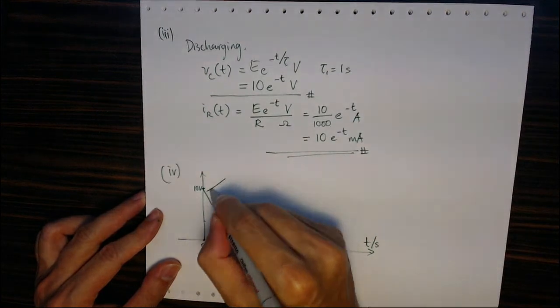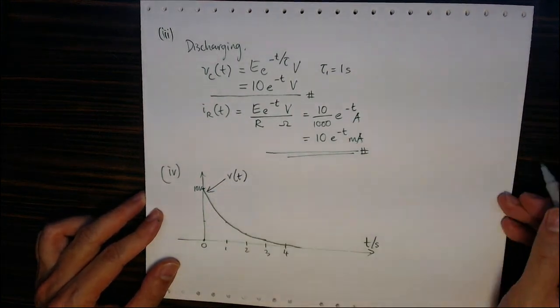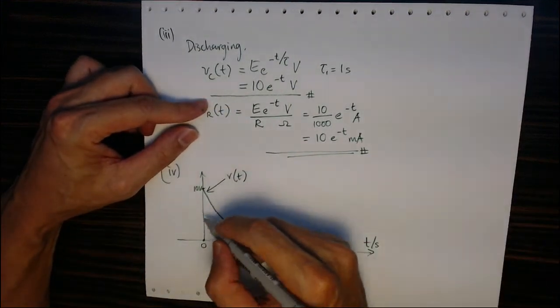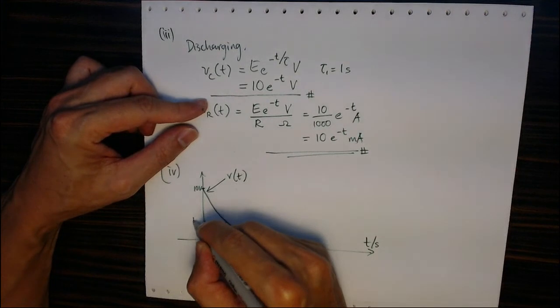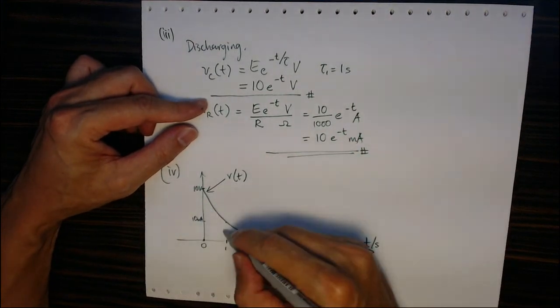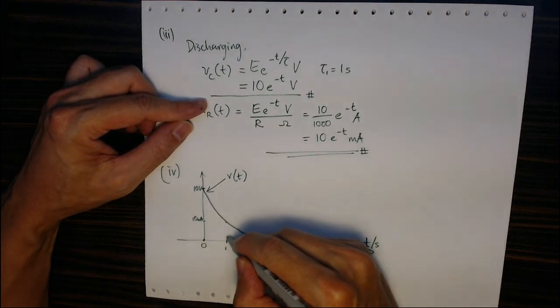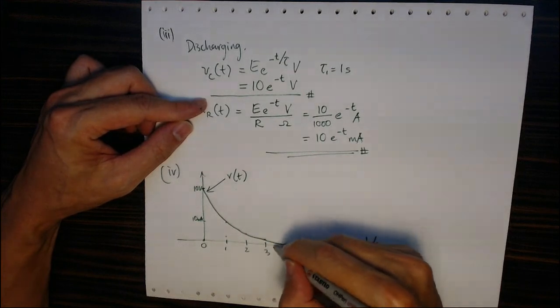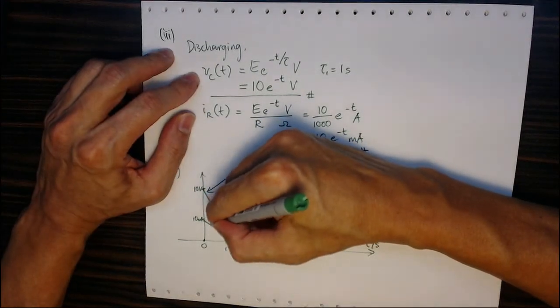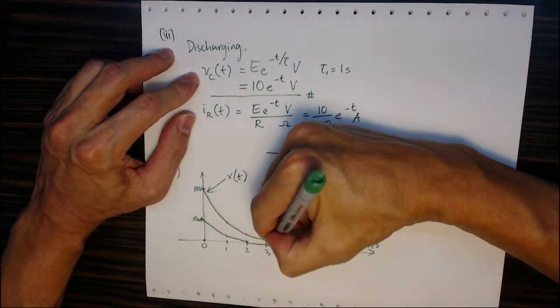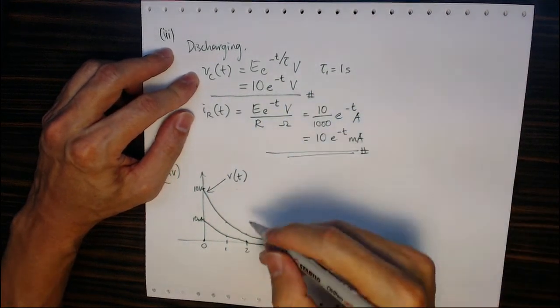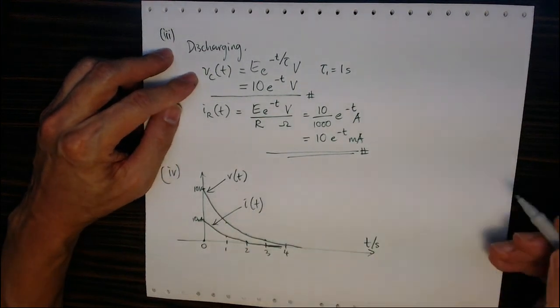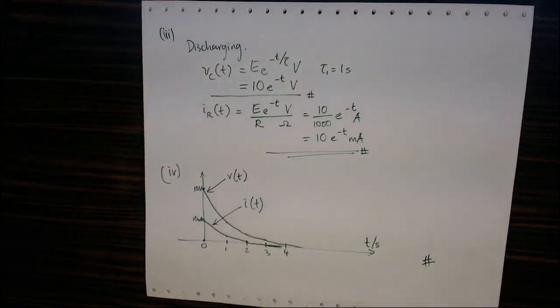This is the Vc(t) decay voltage waveform. Similarly for current, starting at 10 milliamps, it drops to about 3.7 milliamps, then continues to decay exponentially down to nearly zero, following the same curve shape.